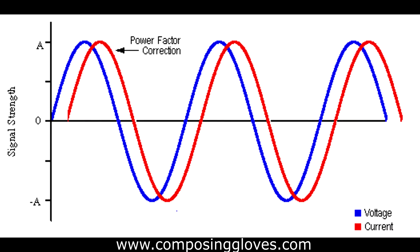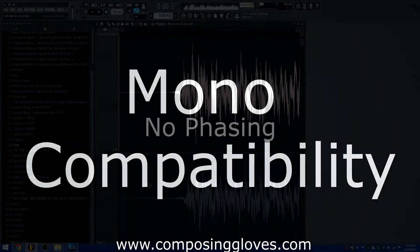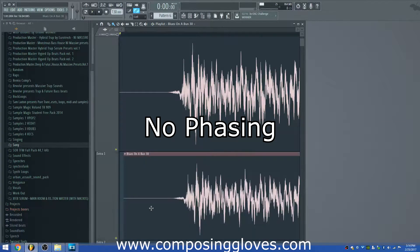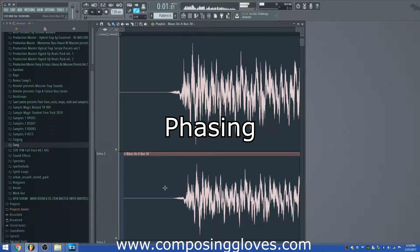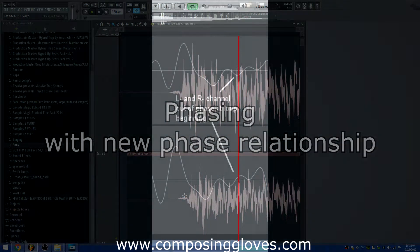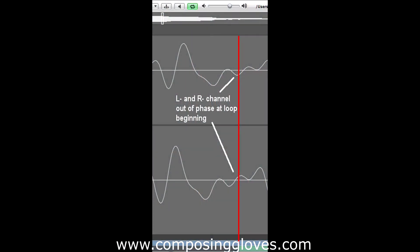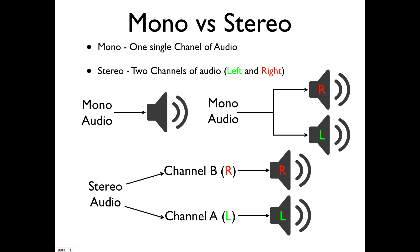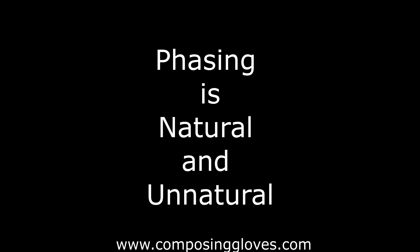You've probably at some point been worried about mono compatibility — which is just code for: will my mix suffer from phasing when I take the left and right signal and combine them together? Such as if you were to play your mix over a phone. This is called being summed to mono. Note that this is not real mono, because the original signal was stereo. Real mono signals are actually mono, just like how mono signals being panned is not real stereo.